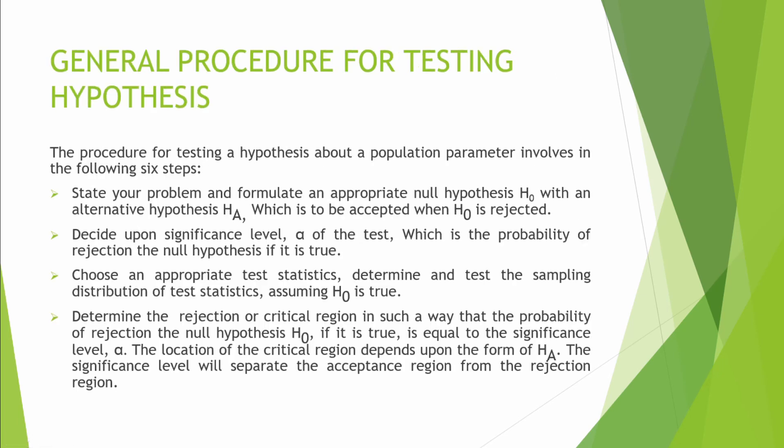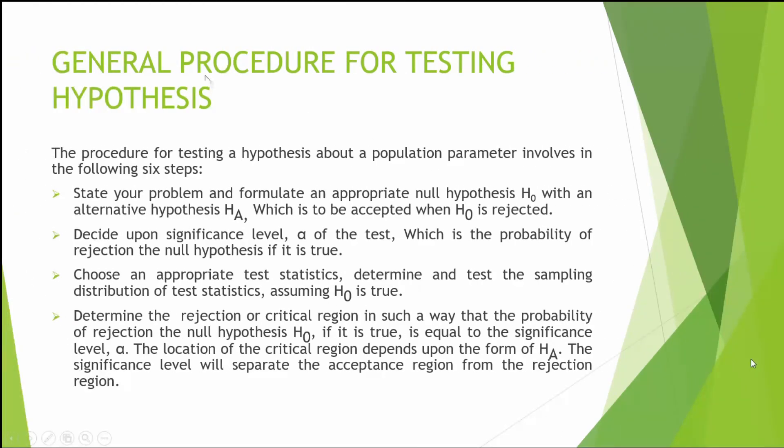The last topic is the general procedure for testing hypothesis. The procedure involves six steps. Step one: state the problem and formulate an appropriate null hypothesis along with an alternative hypothesis, which is to be accepted when the null hypothesis is rejected.